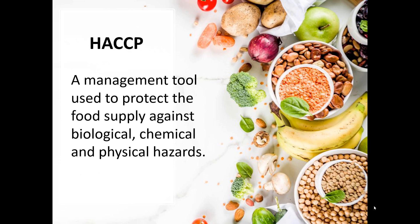A chemical hazard might be where chemicals were used to clean the counter — if the counter wasn't washed down sufficiently afterwards, there could be chemical contaminants in your food. A physical hazard might be where one of the butchers was using a pencil and shards of wood got onto the counter and into the meat product.